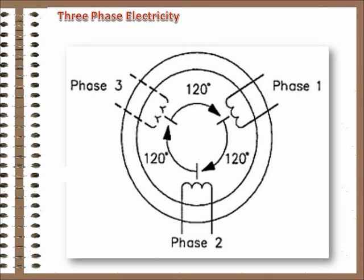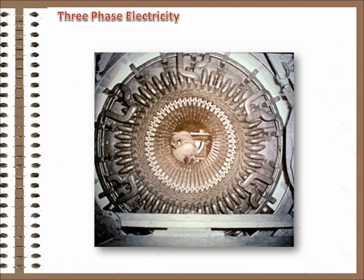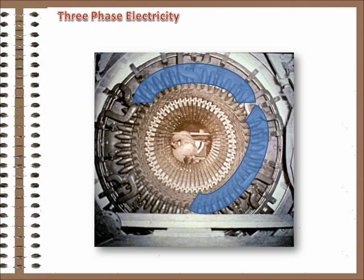But the generators don't have just one continuous wire inside them. There are actually three separate sets of wires inside each generator casing. The wire sets are spaced evenly around the interior of the generator case, or stator as it's called, dividing the 360 degree circle into three 120 degree segments.